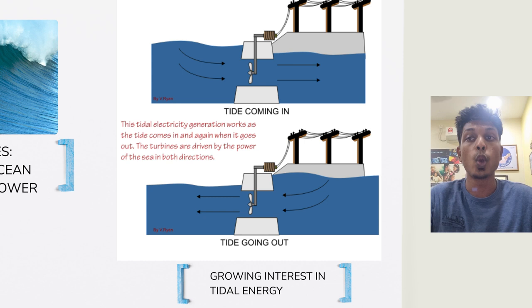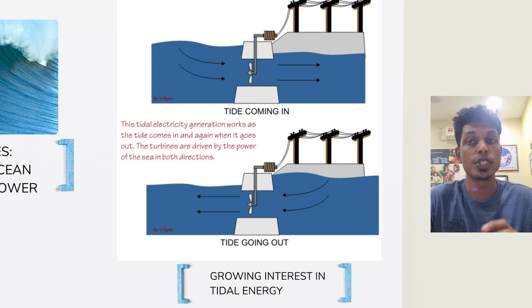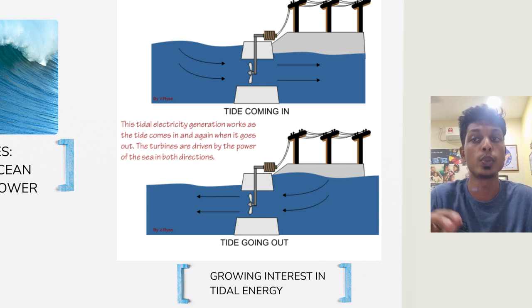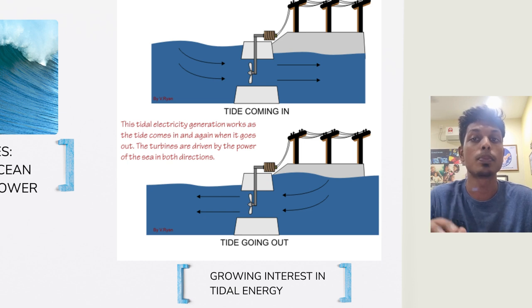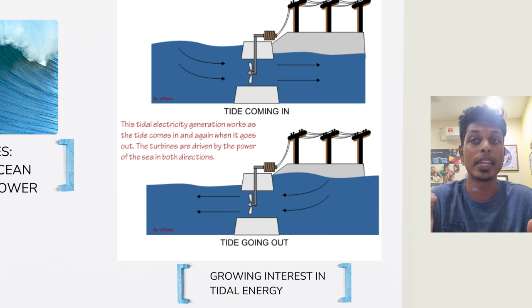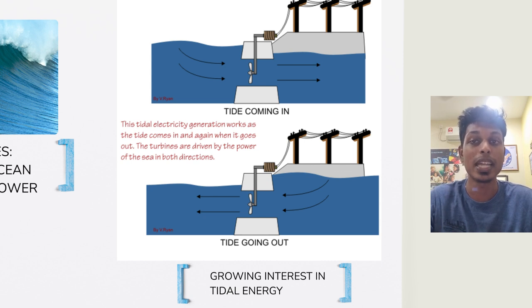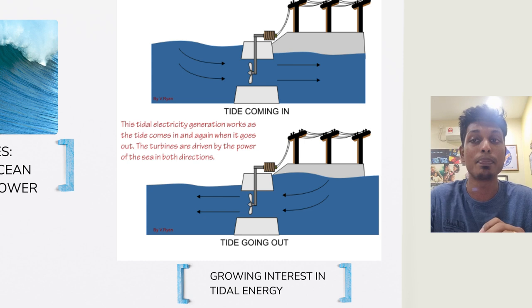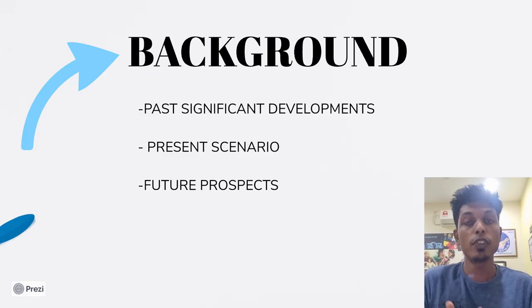Third: growing interest in tidal energy. Tidal energy is defined as the conversion of the movement of ocean water volumes into electrical energy using various tidal systems. Tidal energy is potential energy created by tides — height changes in sea level caused by the gravitational pull of the sun and moon coupled with the rotation of the earth. In recent times, tidal energy has gained substantial attention as a dependable and predictable source of renewable power.